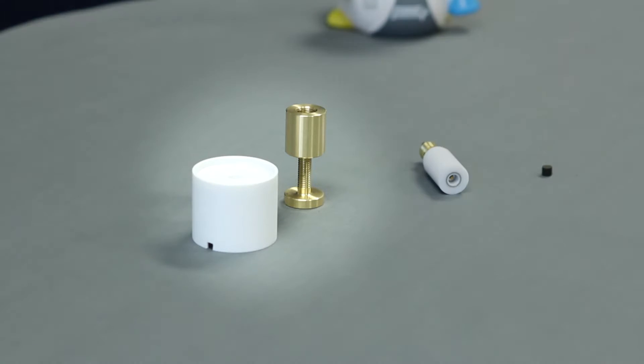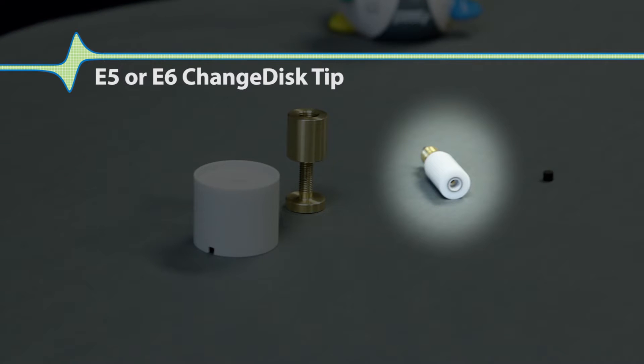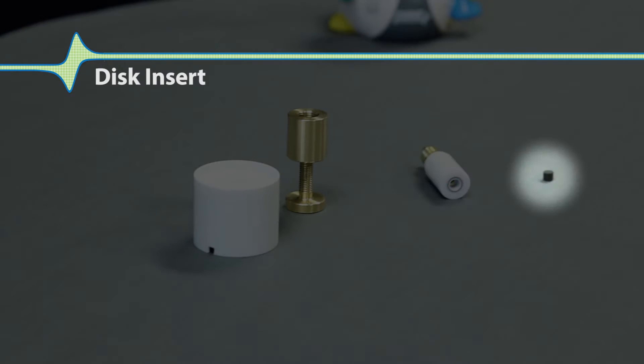First, let's go over what parts we will use in this video. The toolkit, an E5TQ or E6 series change disk tip, and a disk insert.